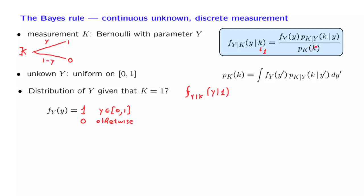The next piece that we need is the distribution of k, given the value of y. Well, given y, k takes a value of 1 with probability equal to y. So the probability of 1, if we're told the value of y, is just y itself. y is the bias of the coin that we're dealing with.